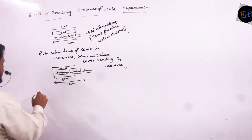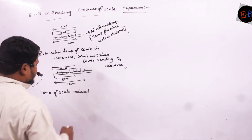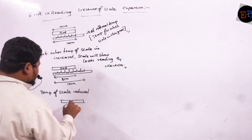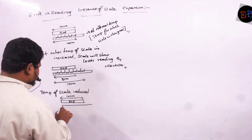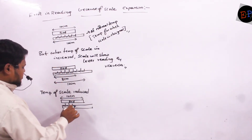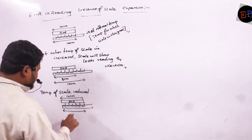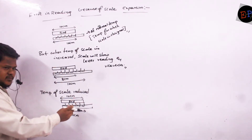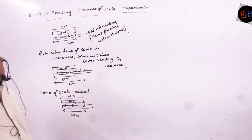When the temperature of the scale is reduced, let us see how we can draw the diagram. This is the rod whose actual length is 10 cm, and now this is the scale. When I check this reading, I will see it is 12 cm. So why is it showing a greater reading? Because the length of the scale has reduced, the readings come closer together, and the scale will show a greater reading. This is what happens when the temperature of the scale changes.